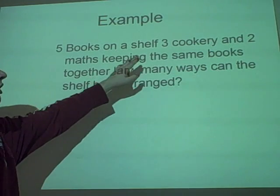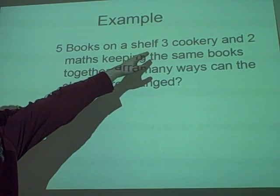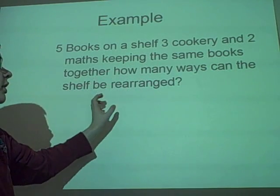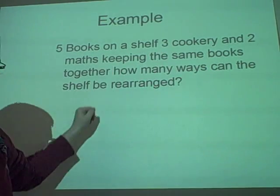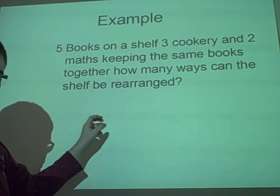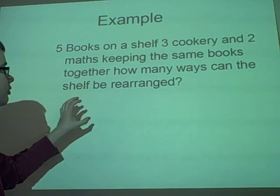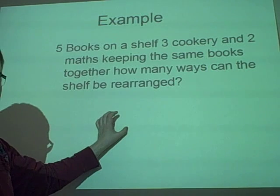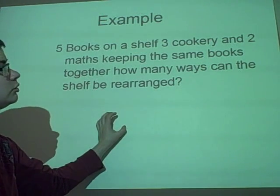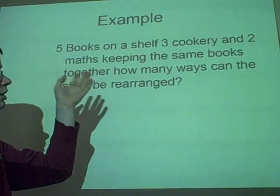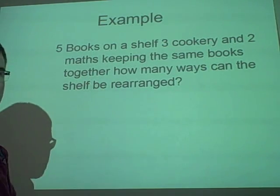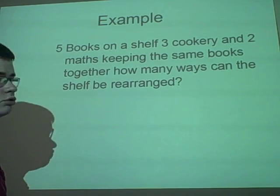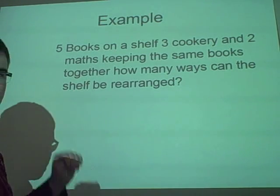But what we have now is we have the cookery can be arranged in a certain way, so that's three factorial, and the maths can be arranged in another way, which is two factorial. So, we have five factorial over three factorial times two factorial. But you may also notice that you can have the cookery and then the maths, but you can also have the maths and the cookery. So we want to multiply it by two, because there's two different ways they can be set out.